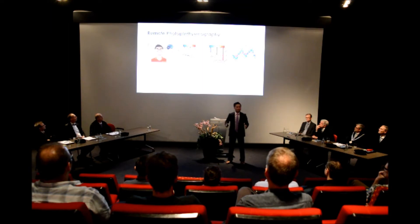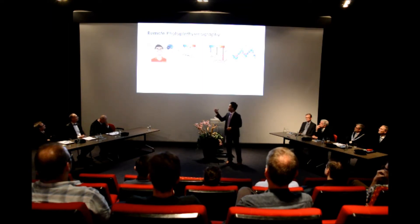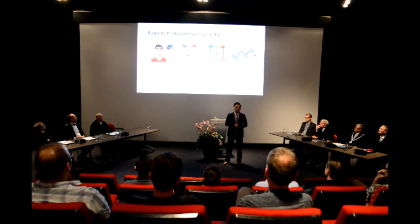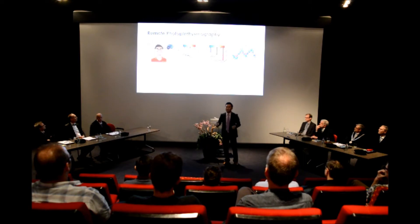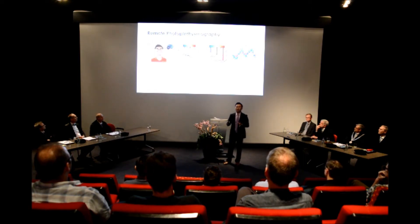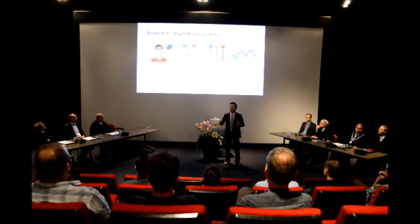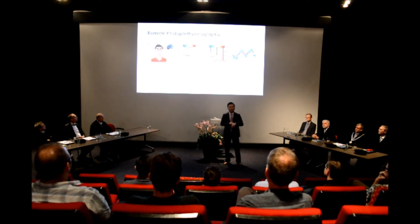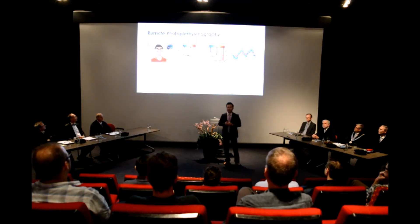A basic remote PPG setup has three components: the light source, the human skin, and the camera. The principle is very similar to PPG. When the pulsatile light is propagating in the cardiovascular system, it will change the amount of hemoglobins and thus cause variations of the optical absorption and scattering properties across the light spectrum. By using a camera to measure the light reflected from the skin, we can get color signals that track the blood volume changes over time.